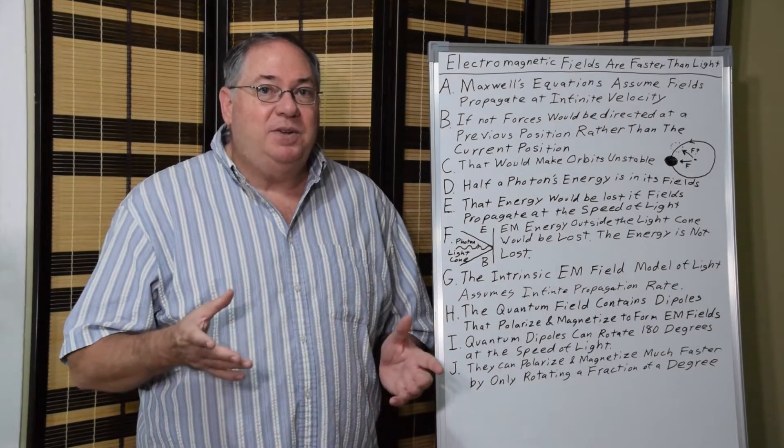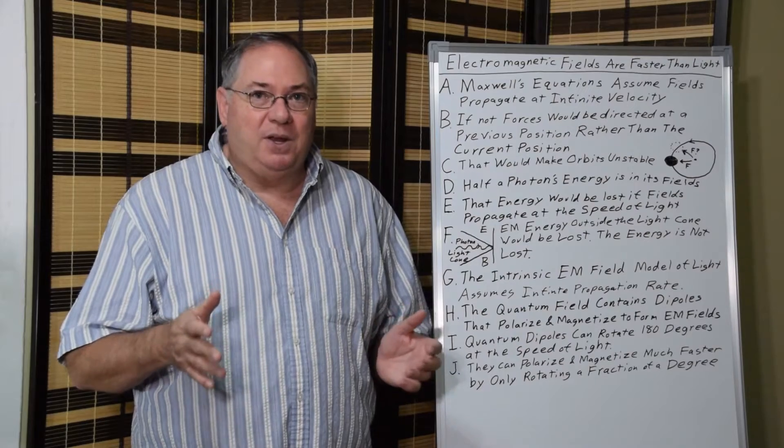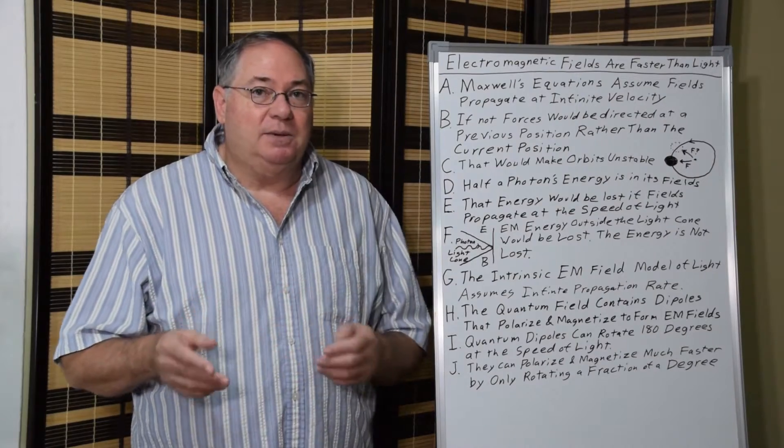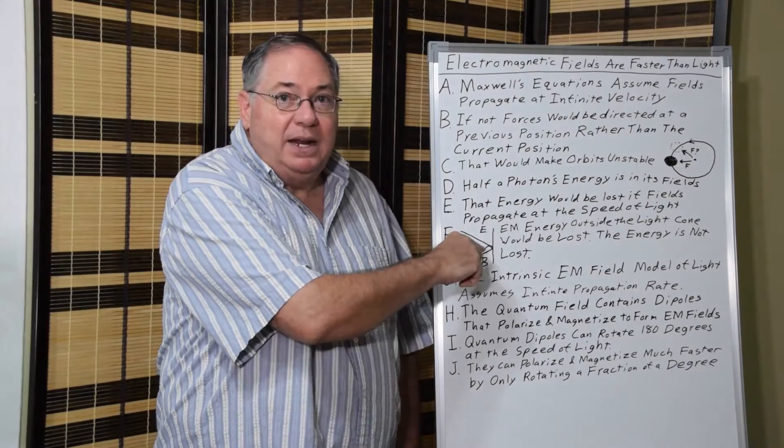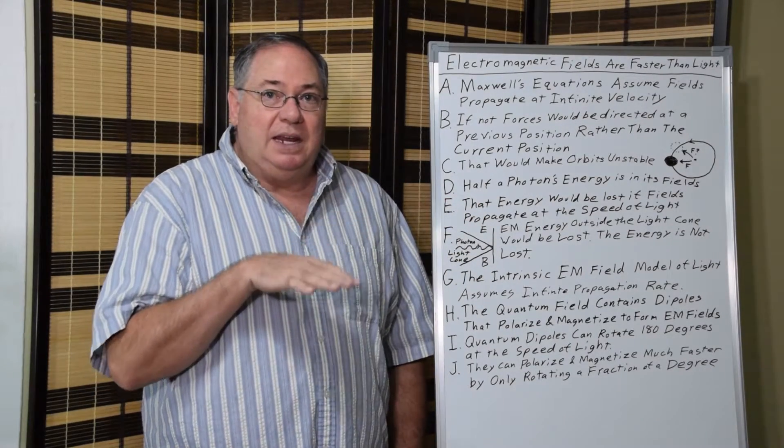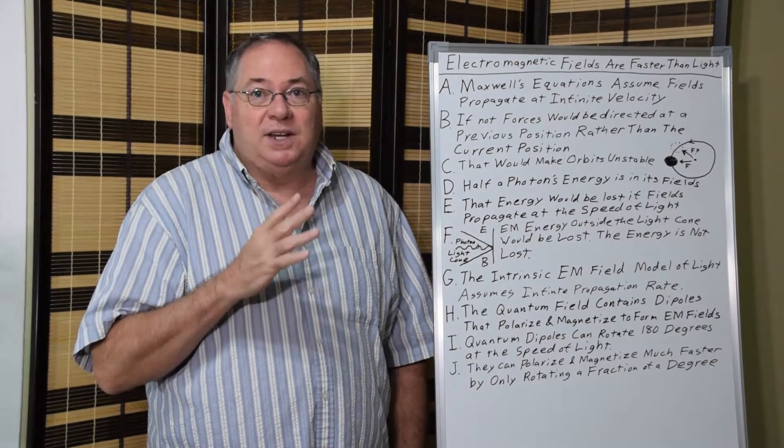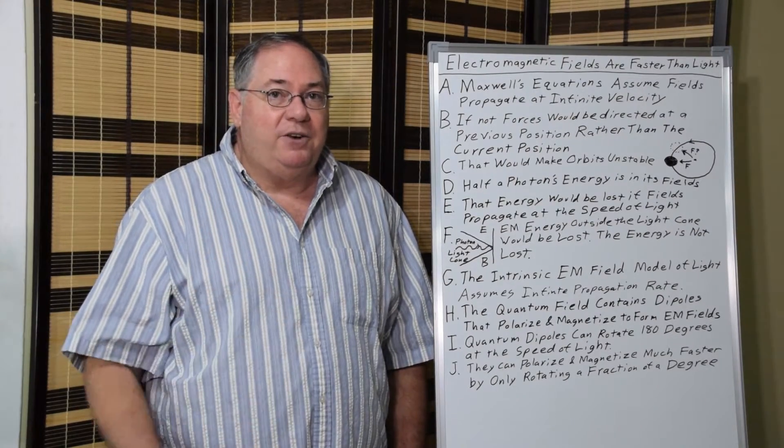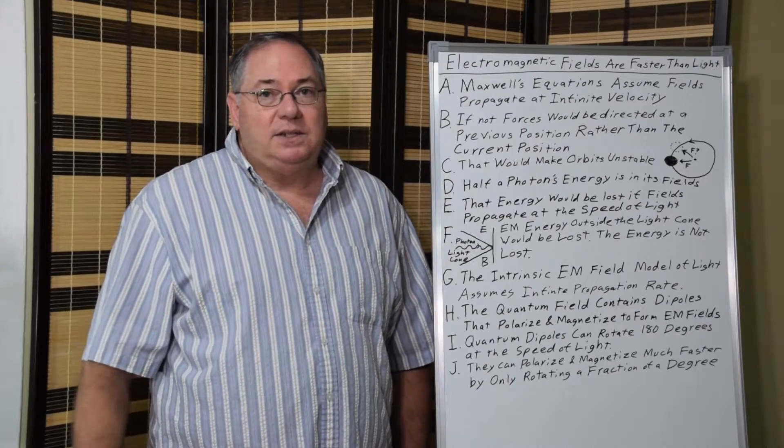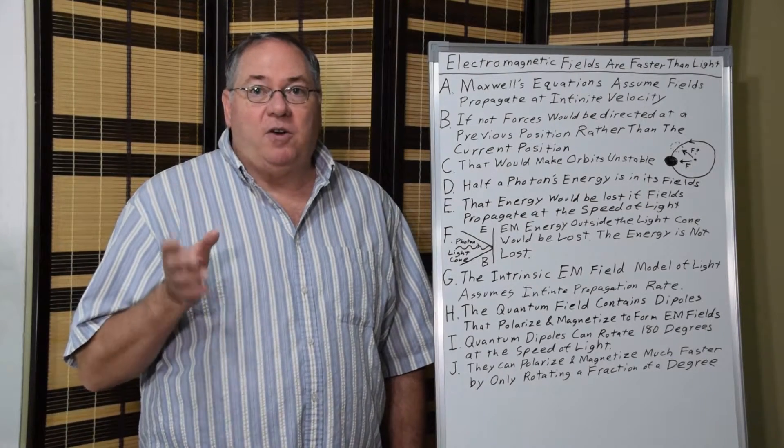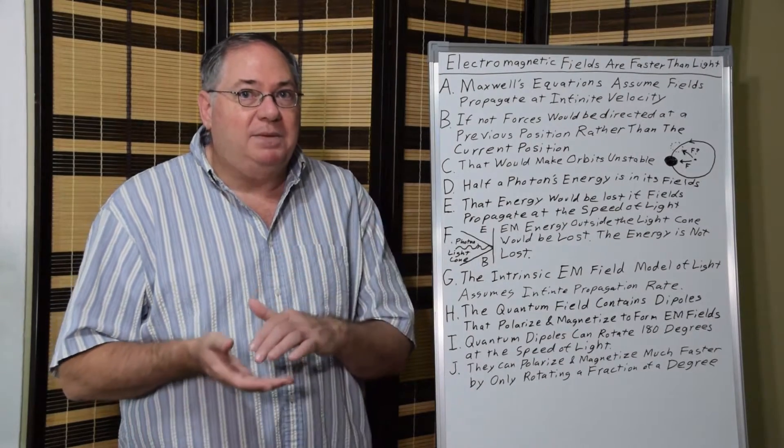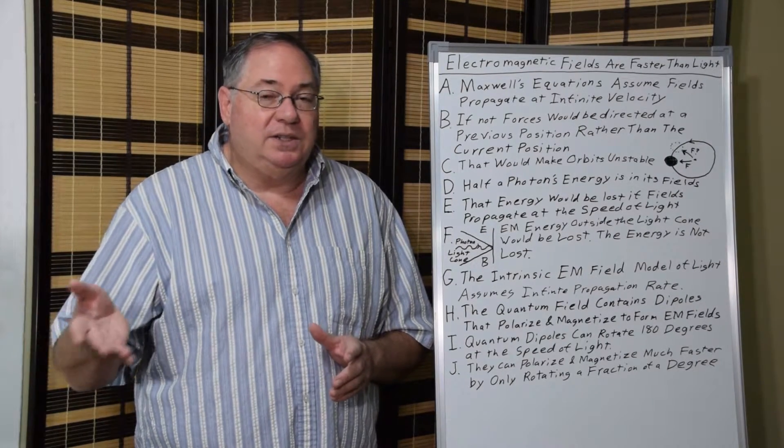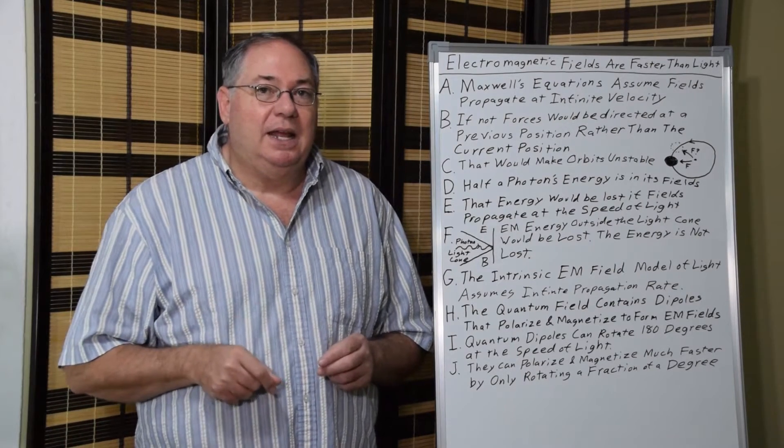We typically ignore half the energy when we do kinetic energy equations and other types of equations. But we can't. And in a photon, we generally include it because we can measure the total energy, which includes the field energy once it gets absorbed. But like I said, if we have a speed of light limit, then most of the electromagnetic field is outside the light cone that's limited by the speed of light. And that energy will be lost. And it's not lost. So we know that the electromagnetic fields collapse very rapidly. And that energy does get absorbed by the detector or sensor or electron that's doing the absorbing.